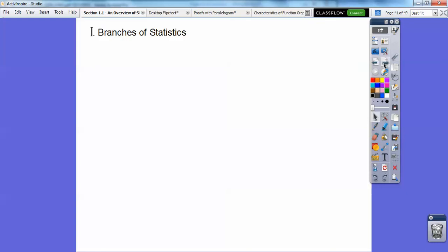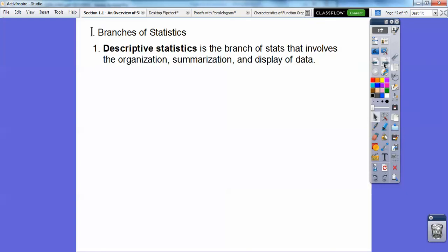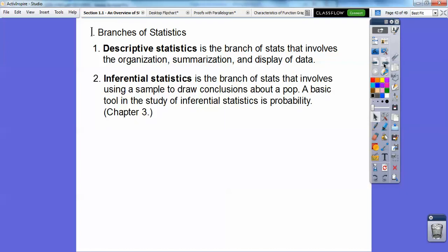Branches of statistics. Descriptive statistics is the branch of statistics that involves the organization, summarization, or the display of data. Inferential statistics is where we make good educated guesses, and it's the branch of statistics that involves using a sample to draw conclusions about a population. A basic tool in this study of inferential statistics is probability, and that's going to be in about a month or so when we get to Chapter 3.